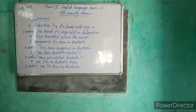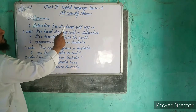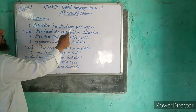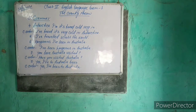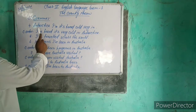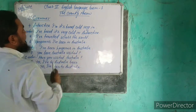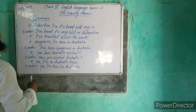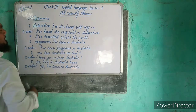Now see the fourth sentence. The fourth sentence is: it's hard cold very in Antarctica. It is not in correct order. The correct order is: I have heard it's very cold in Antarctica.